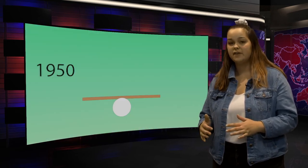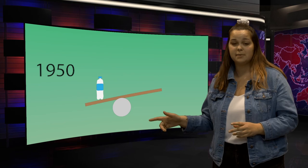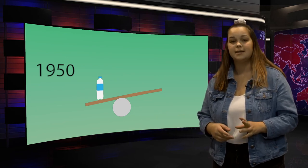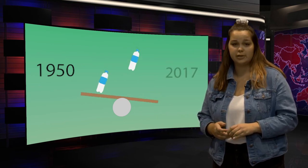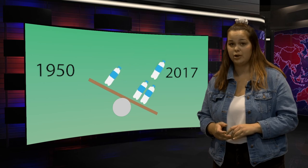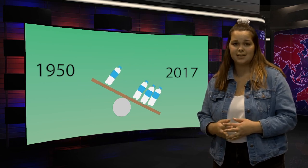In 1950, 2 million tons of plastic was produced each year. Today, 8.3 billion tons of plastic is produced each year. That's a massive increase in the last 70 years.